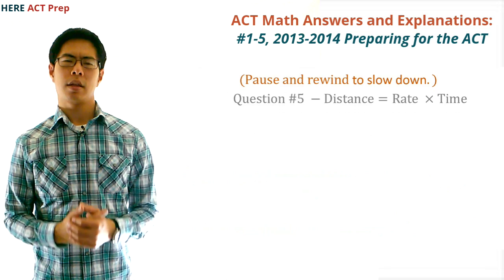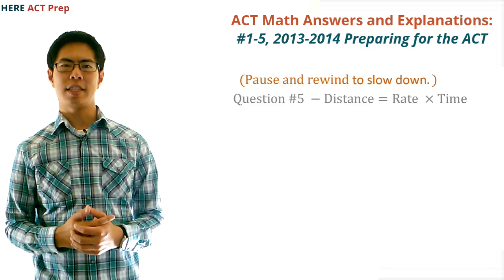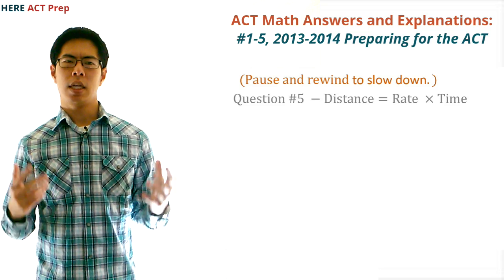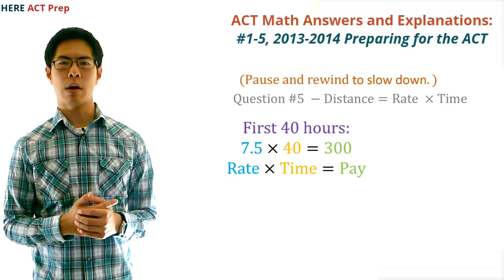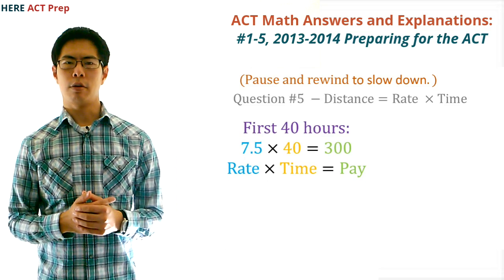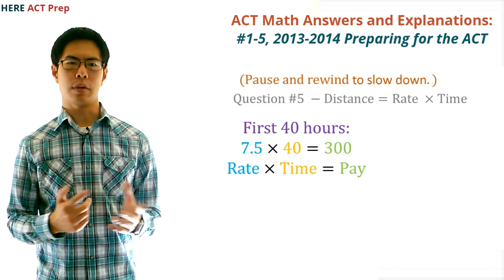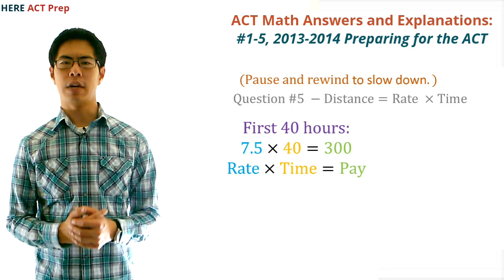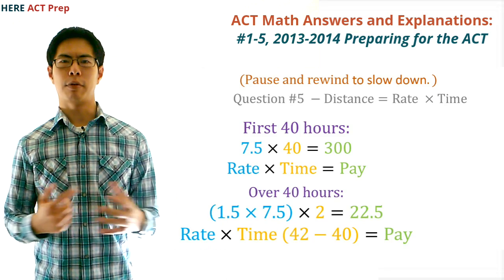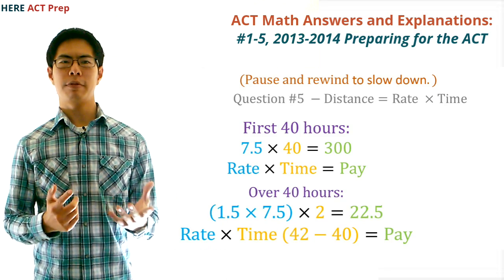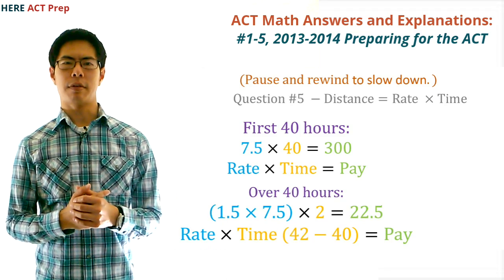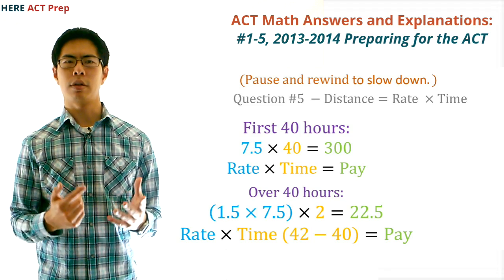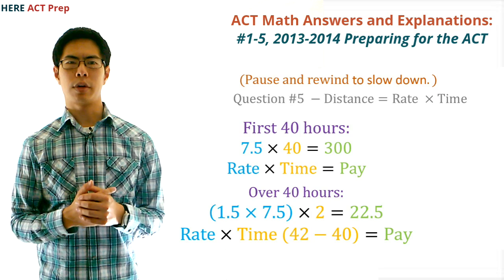Question number five. The concept this question tests is pay equals rate times time. If she earns $7.50 per hour for the first 40 hours, then her pay equals 7.5 times 40, which equals 300. Next, if she earns one and a half times her regular pay for every hour over 40, and she works 42 hours, then she gets paid 1.5 times 7.5 for two hours. So we do 1.5 times 7.5 times 2 to find her overtime pay, which equals 22.5.